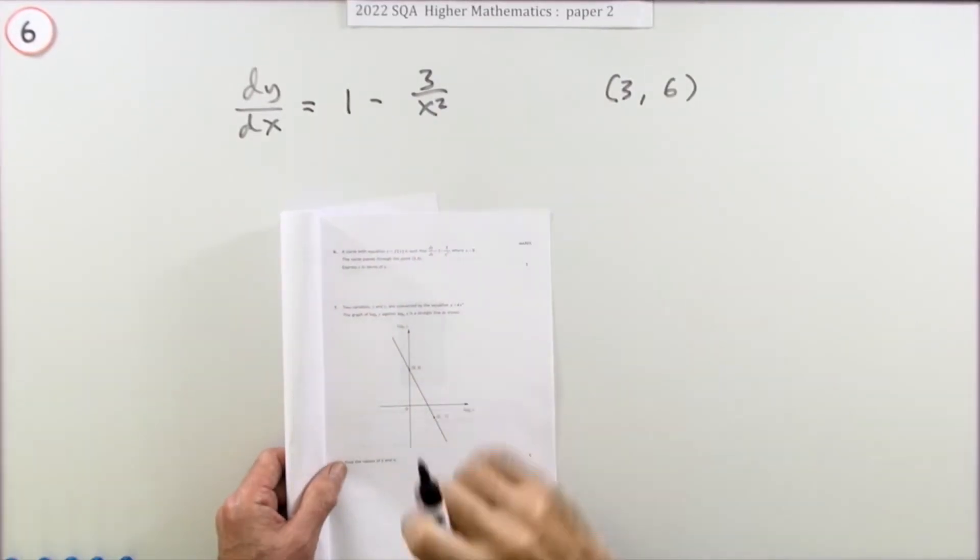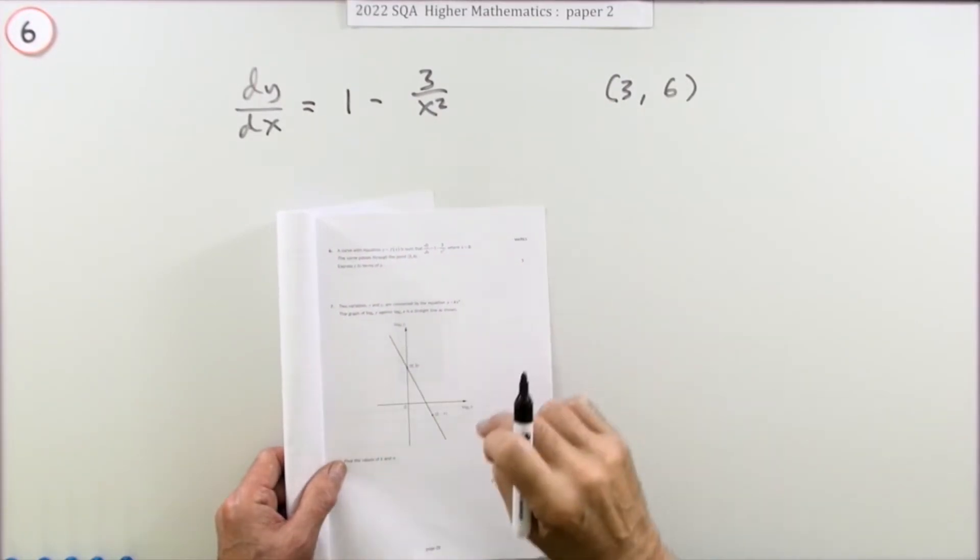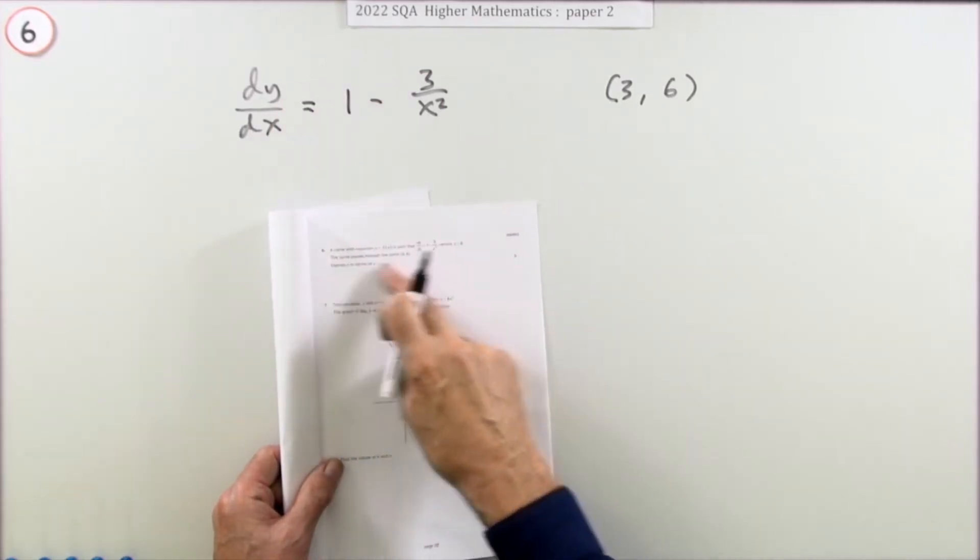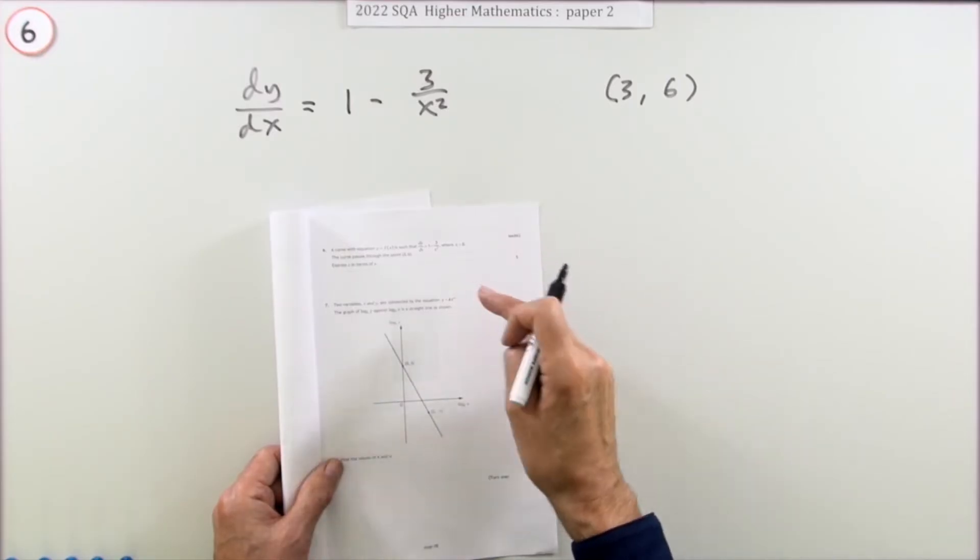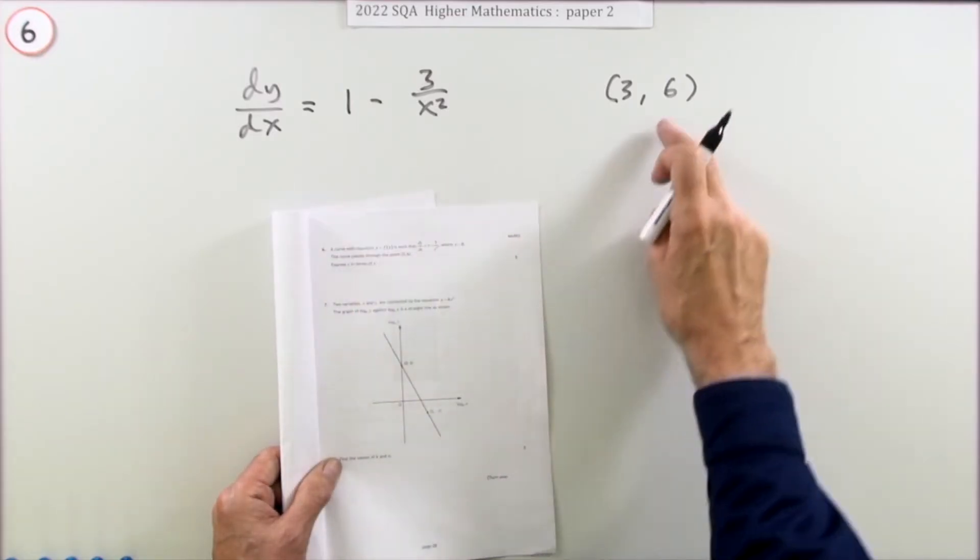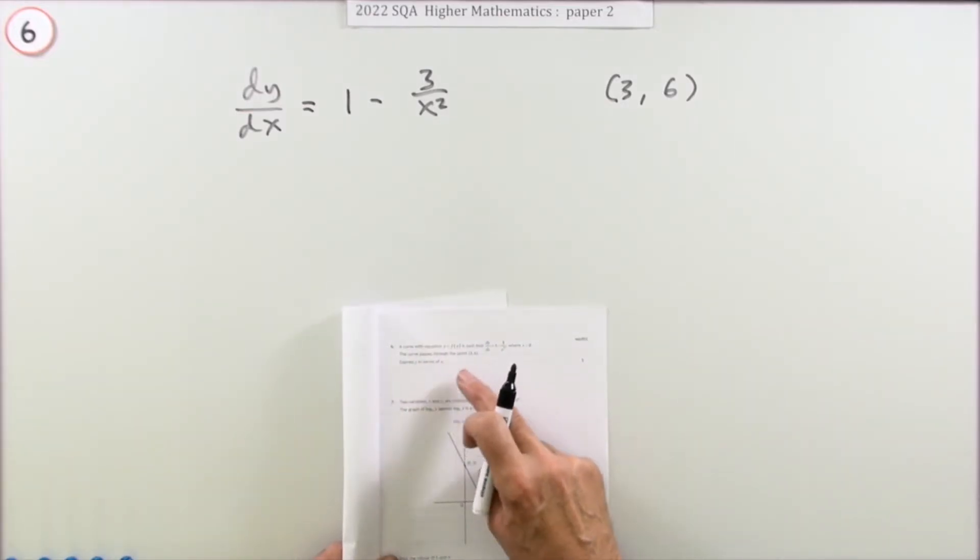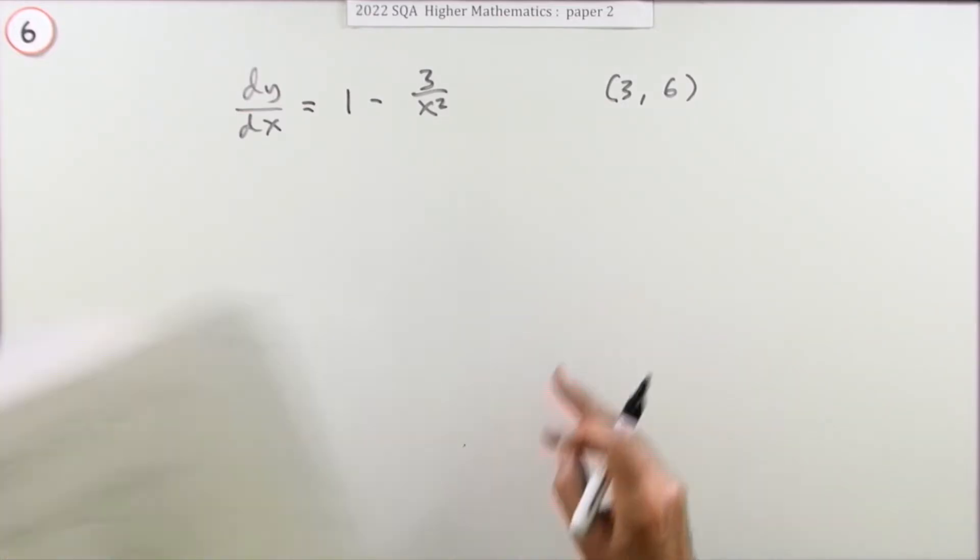Question 6 then, from the 2022 Higher Maths paper 2, 5 mark question. You've got an equation for the derivative of some curve, and you've defined the original equation, given that it passes through this point here. Express y in terms of x. In other words, what's the equation of this curve?